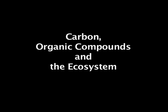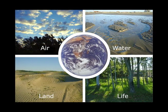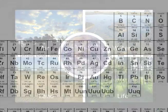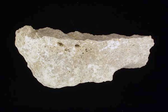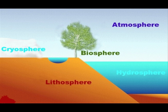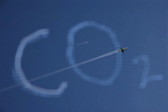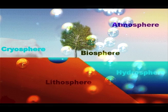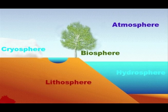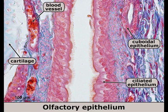Carbon, Organic Compounds, and the Ecosystem. Natural cycles carry the elements in varying molecular forms through the Earth's spheres. Take carbon. Carbon atoms can be found in the rock limestone in the lithosphere, in the gas carbon dioxide in the atmosphere, in carbon dioxide dissolved in water in the hydrosphere, and in organism tissues in the biosphere.